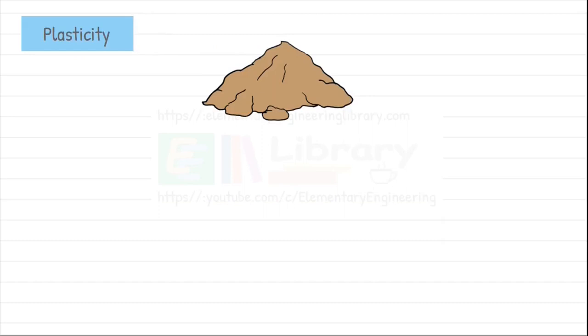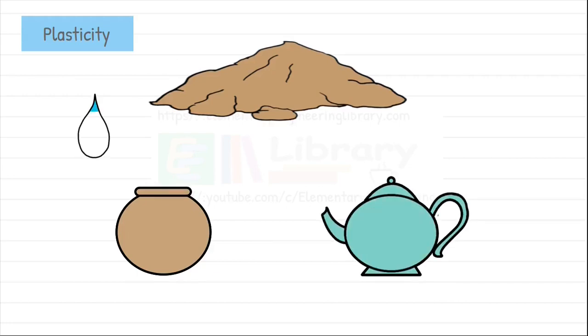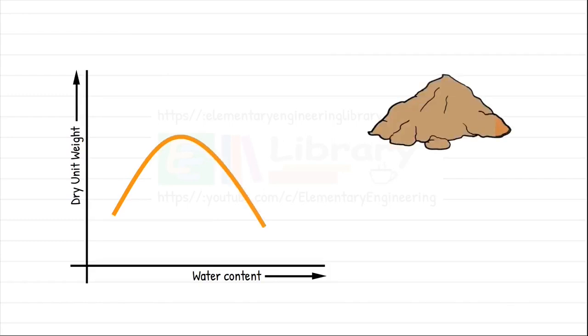Plasticity is the property of soil that allows it to undergo deformation without cracking or breaking. These soils can be molded into different shapes when water is added and can retain that shape when dried. The kind of compaction curve, the typical inverted V-shape curve, is obtained when soils contain at least some amount of cohesive soils that possess plasticity.